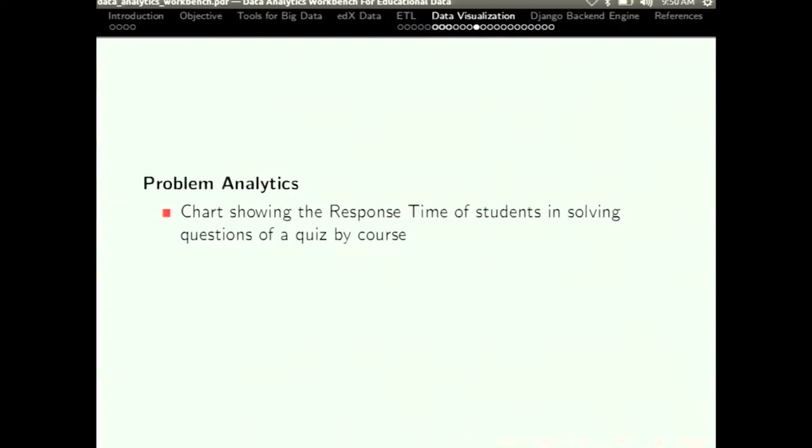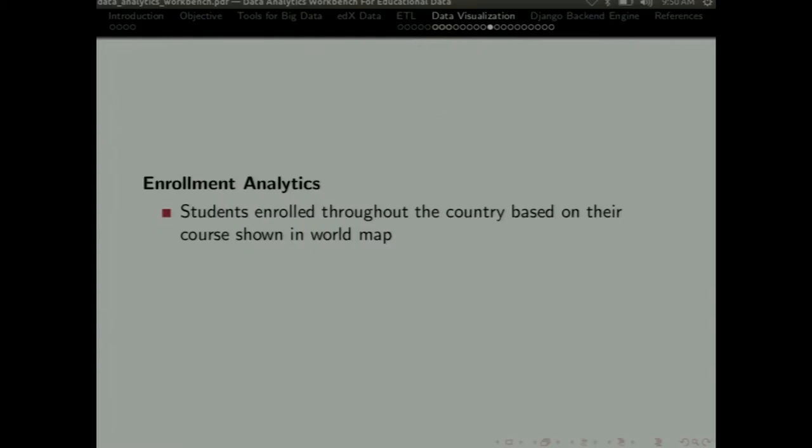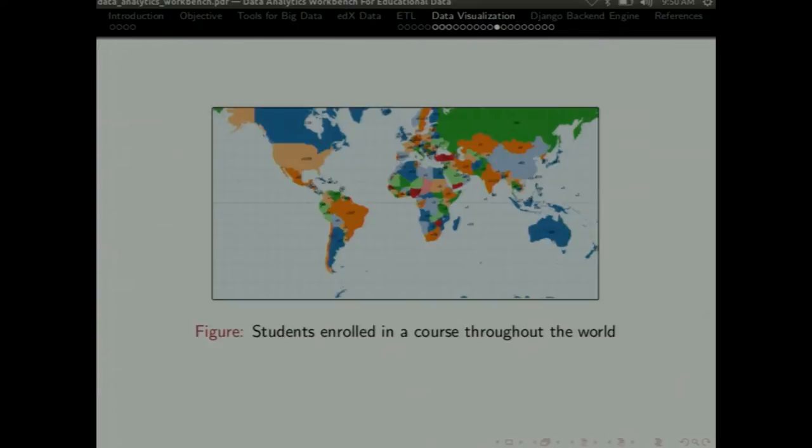Then we have problem analytics. In problem analytics, we have this graph. This is the response time of students solving quiz questions by course. And this is a stacked bar chart. And each stack shows a question and the response time according to the question for a particular user. Next is the enrollment analytics. And this is a world map. This world map shows the number of users registered for a particular course from different countries.